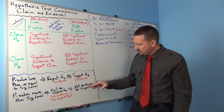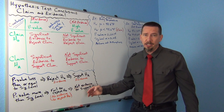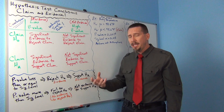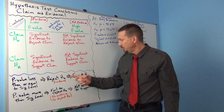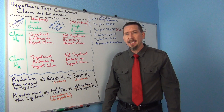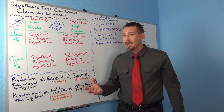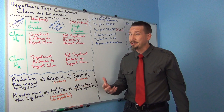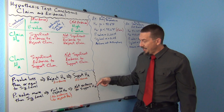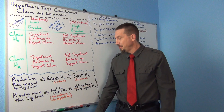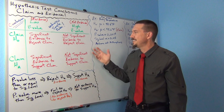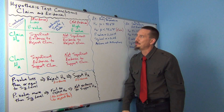You really have four options when you write a conclusion. It's either a high or a low p-value, and then your claim — what the person actually said in the article — could be the null or the alternative. You have to take that into account. Most of the time, claims are usually the alternative hypothesis, so you'll use 'support' more often than you will 'reject.' Let's take a look at this little chart that summarizes it.